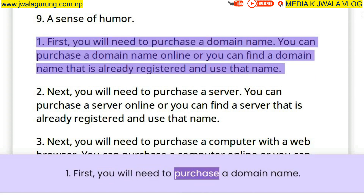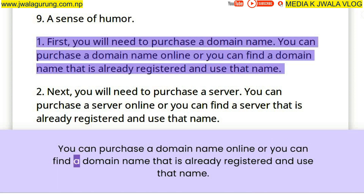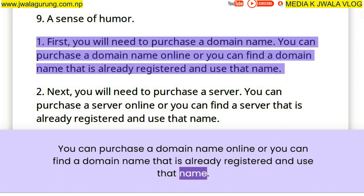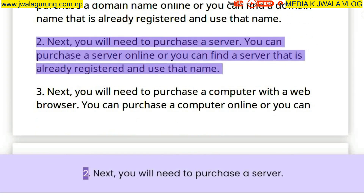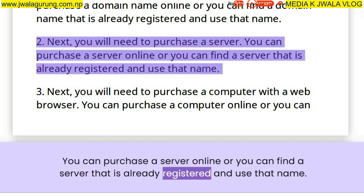First, you will need to purchase a domain name. You can purchase a domain name online or you can find a domain name that is already registered and use that name. Next, you will need to purchase a server. You can purchase a server online or you can find a server that is already registered and use that name.